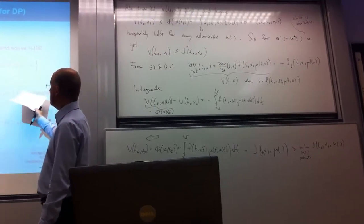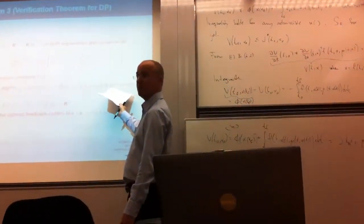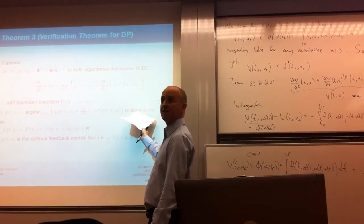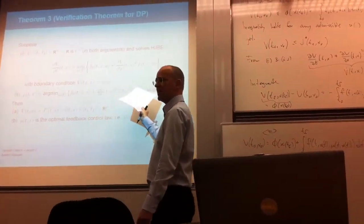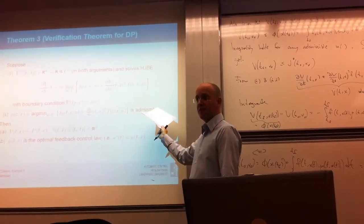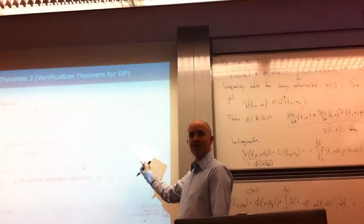And then we suppose also that it is admissible, that means that it definitely satisfies this constraint, because it says here that it's not clear that it is piecewise continuous, but if it is, then it is admissible.